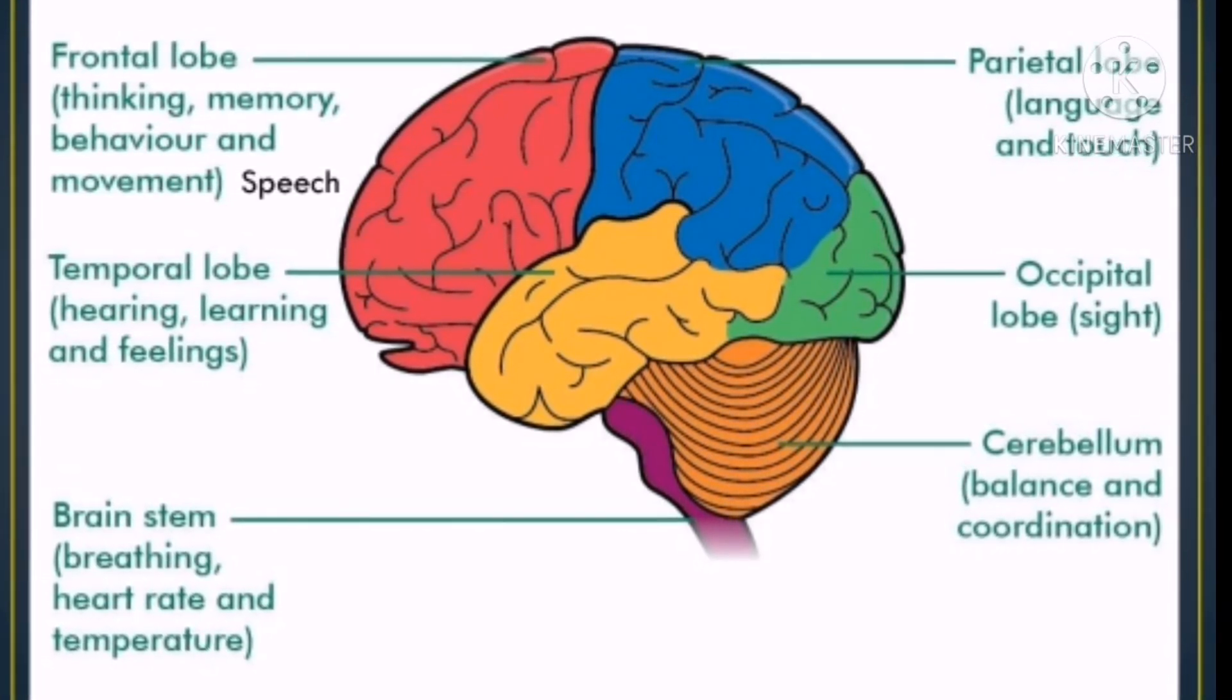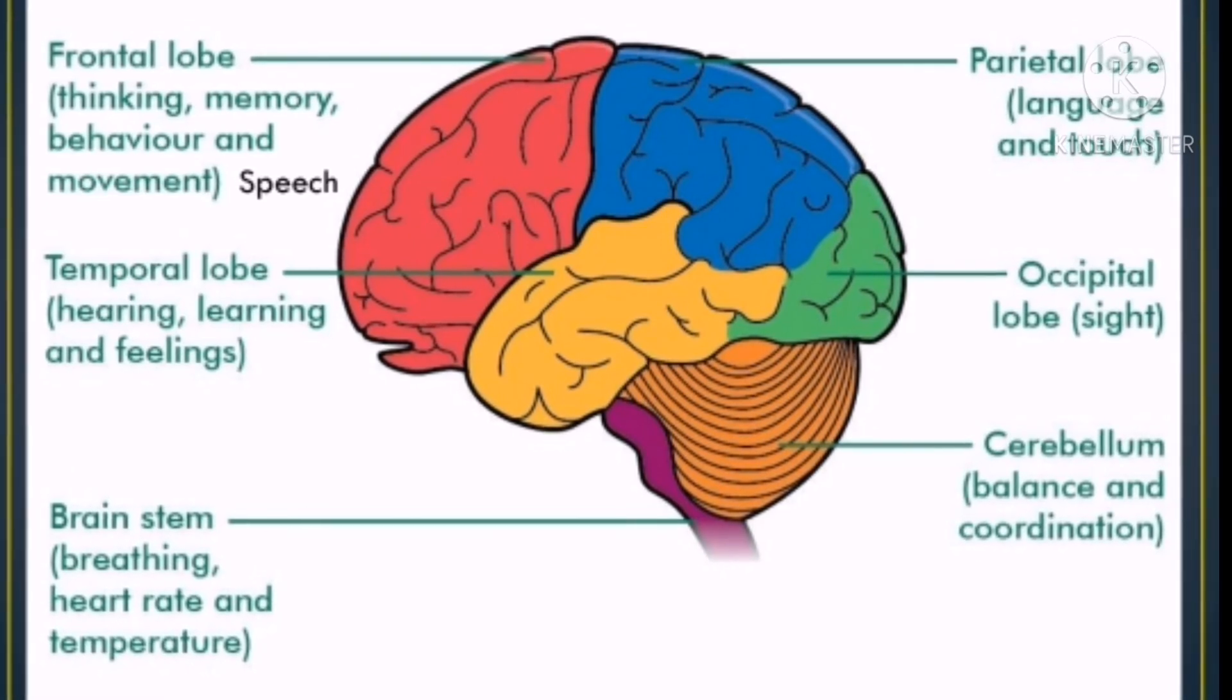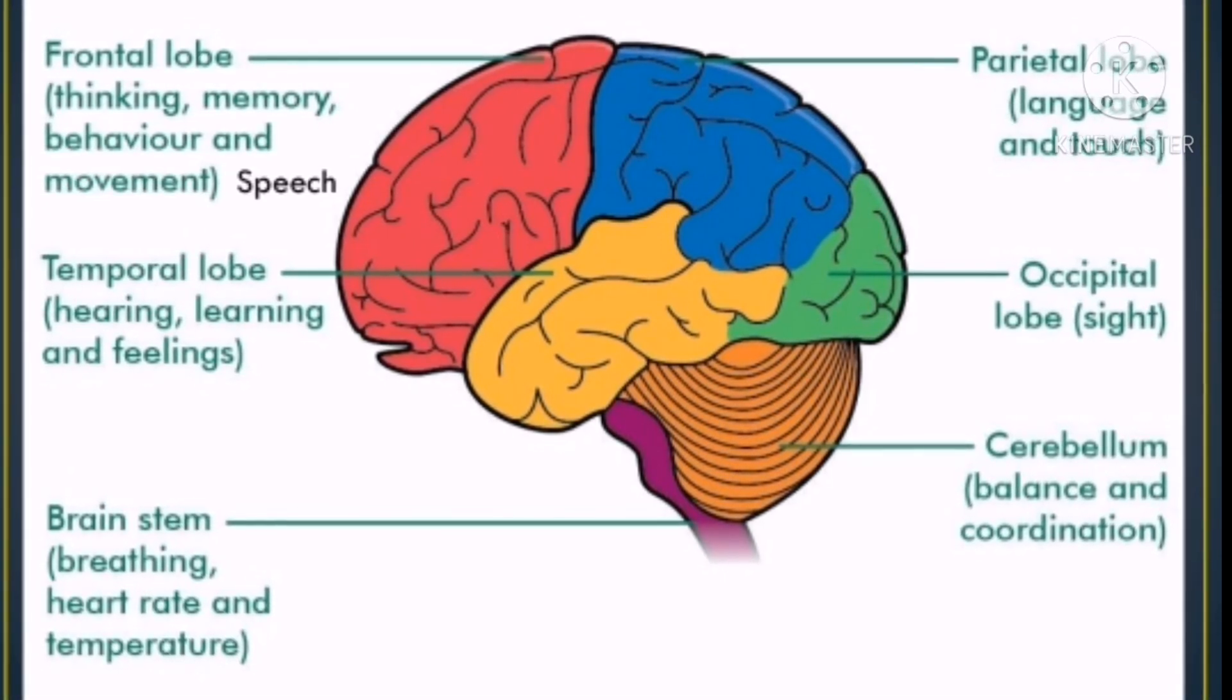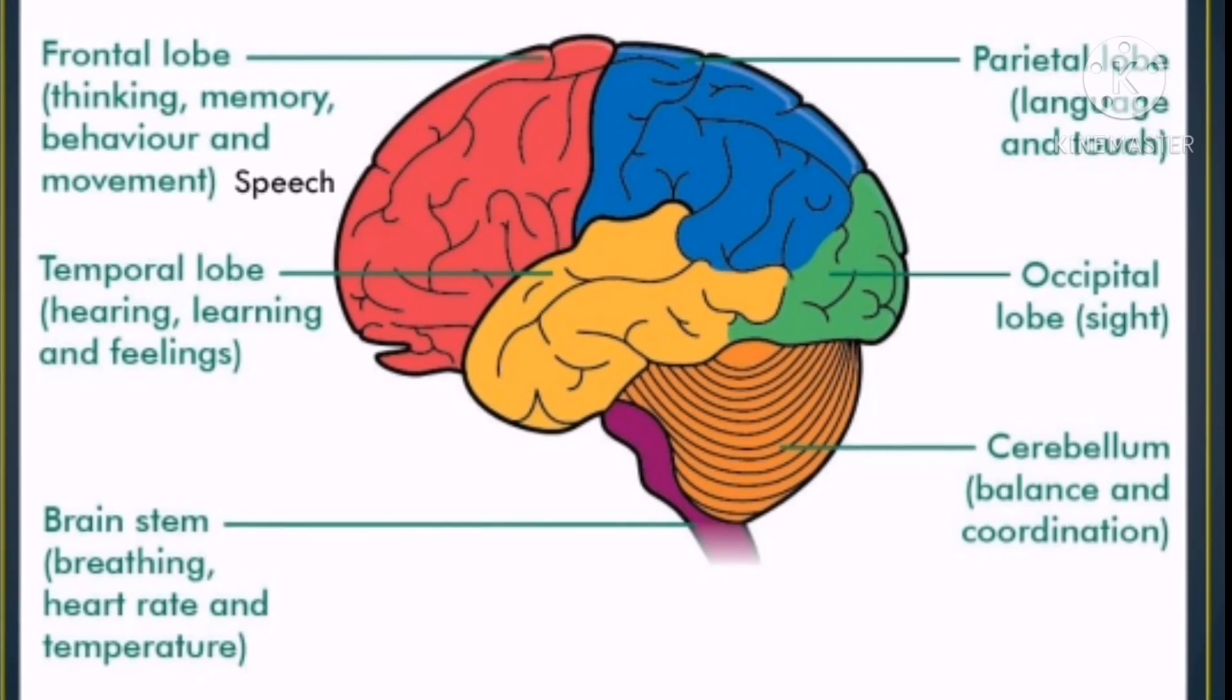The brain is connected to the rest of the body through the nervous system. The nervous system consists of neurons. Neurons are very sensitive cells that conduct impulses throughout the body.